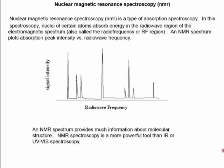In NMR spectroscopy, when RF radiation is absorbed by molecules, the natural spin of the nuclei of certain atoms is affected. Here we have an example of an NMR spectrum. In the spectrum, there are signal peaks, each peak located at a different RF frequency. An NMR spectrum of a compound provides an enormous amount of information about the compound's molecular structure — actually even more information than we normally get from UV-vis or IR spectra.